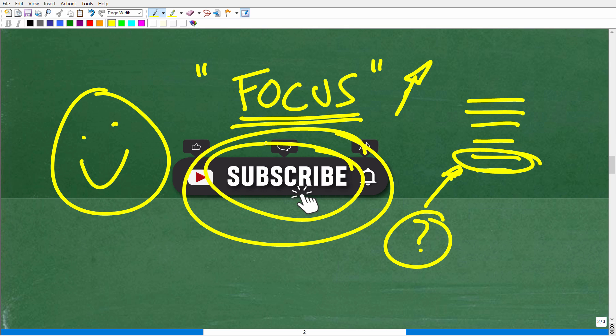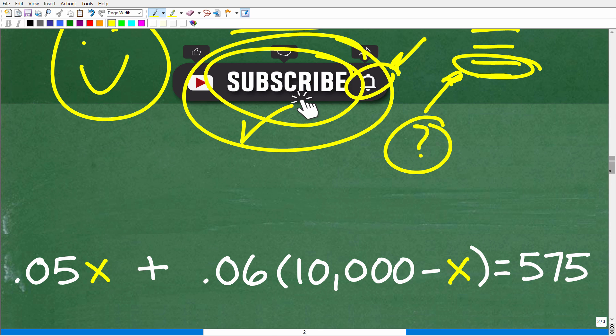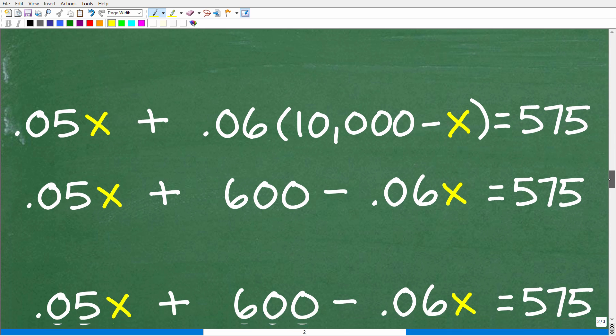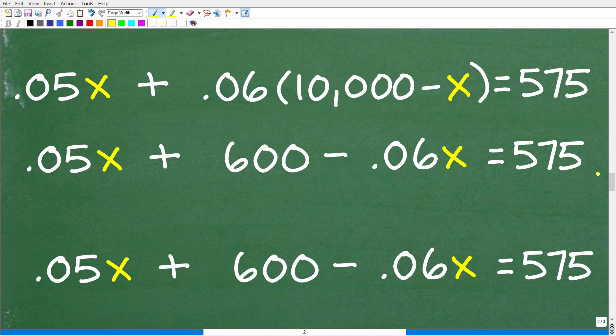So I want you to focus in on that subscribe button. And hit that because I need your support so I can help as many people as possible. And if you're going to do that, hit that notification bell as well so you can get my latest videos. All right, so let's go ahead and focus on the rest of this problem. And let's solve this lovely equation here. So we have 0.05x plus 0.06 times 10,000 minus x is equal to 575.